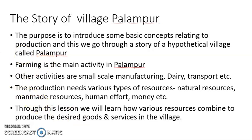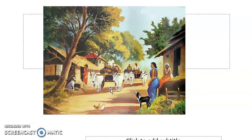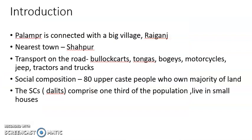Let's start with Palampur village. It is a hypothetical village, and it is similar to villages you may have come across in your life. In the picture, you could see houses which are plastered with mud and straw, and we can see some bullock carts which are used in villages. Such types of villages are common in India.